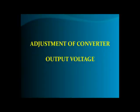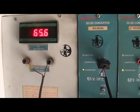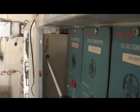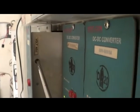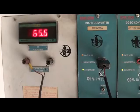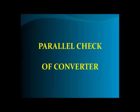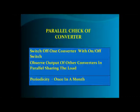Adjustment of converter output voltage: Pull the DC-DC converter out from the front. Connect test points to the common digital voltmeter. Adjust the potentiometer to get the desired output. For parallel check of converters: switch off one converter using the on/off switch and observe the output of other converters in parallel sharing the load. Periodicity: once in a month.